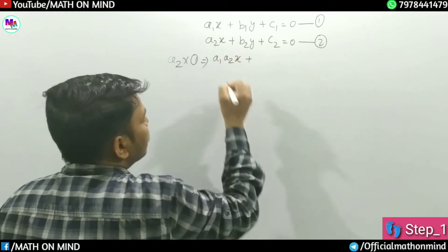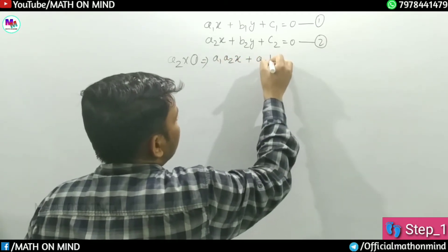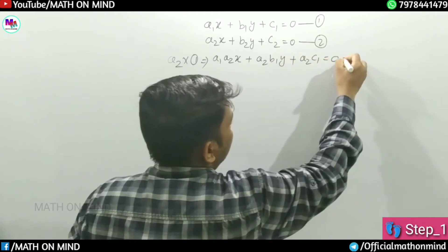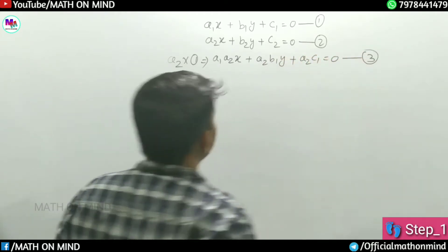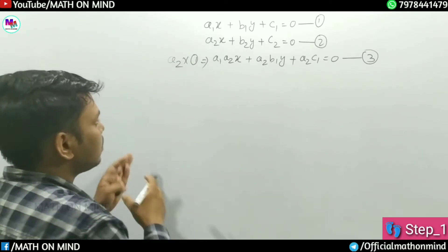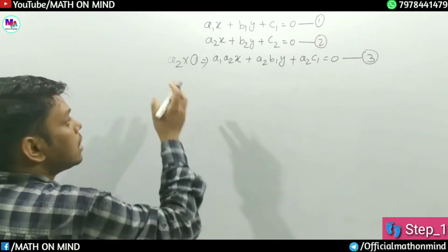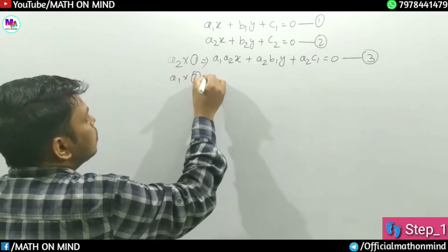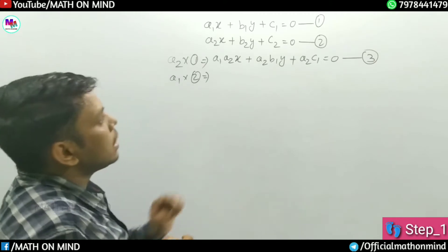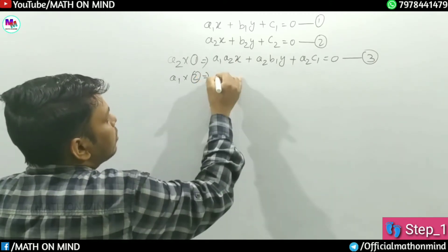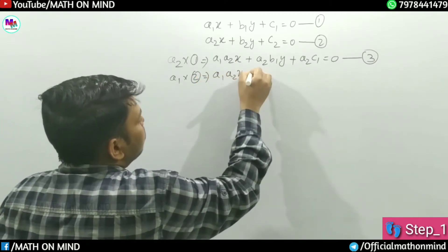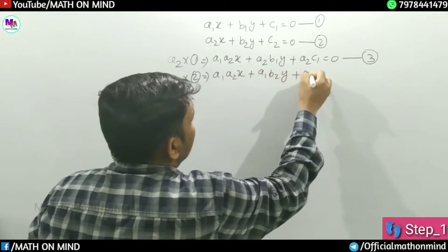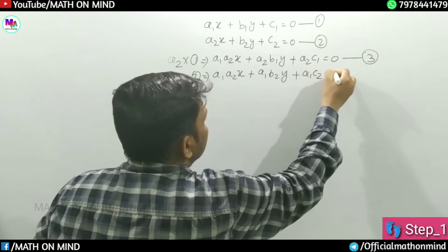2x plus a2 b1 y plus a2 e1 equals 0. This is an equation. We can compare the second equation. We can see a1 into equation 2. If we can see a1 equation 2, the second equation is a1 to a2 x plus a1 to a2 y plus a1 is equal to 0.